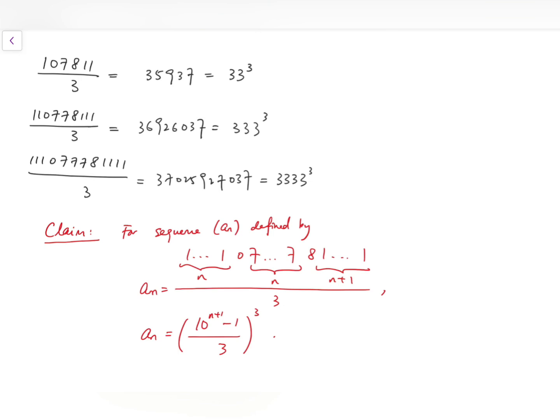If I define such a sequence formally, starting with n 1s followed by a 0, and then another n 7s, and then an 8, and then lastly, n plus 1 digits of 1s, and then this number divided by 3,